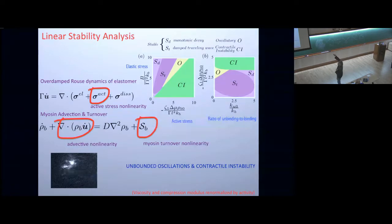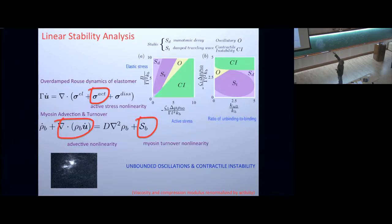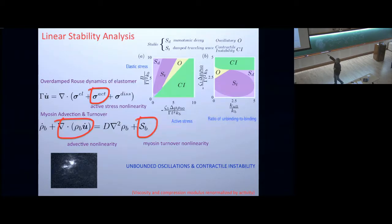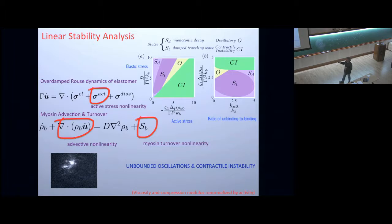We can do standard things: linear stability theory and add nonlinearities. The linear stability phase diagram plots elastic stress versus active stresses. For very large elastic stress — when the ropes are very rigid — it won't be affected by the bound myosin, giving a stable configuration. When active contractile stresses are very high, the myosin can lead to a contractile instability. In the middle, when elastic stress is comparable to active stresses, you get oscillations. However, in linear theory the amplitude of oscillations is unbounded, which is cured by adding nonlinearities.